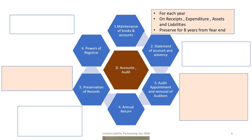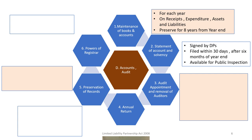An LLP is required to maintain books and accounts as prescribed, for each year in respect of all its receipts and expenditures, income and outgoings, and assets and liabilities. The books and accounts must be preserved for a minimum of eight years after the year end. From the books of accounts, it is required to prepare a statement of account and solvency, to be filed with the registrar within 30 days after the expiry of six months from year end. This statement is available for public inspection.